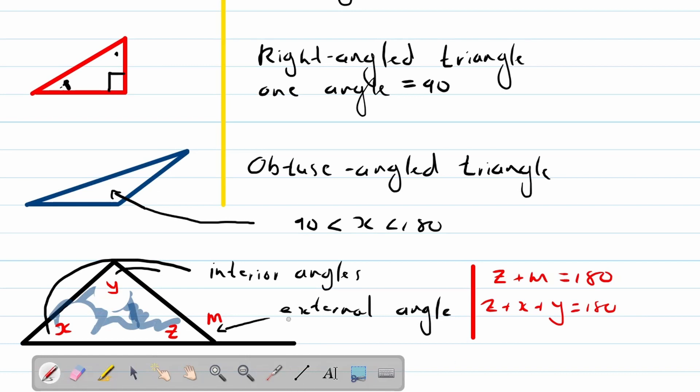This then automatically means that m must be equal to x plus y. So this exterior angle of the triangle is equal to the opposite interior angles added together, y plus x. So keep that in mind, you'll be working with that a lot in high school.